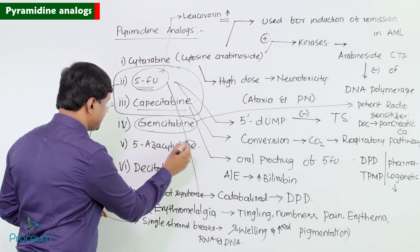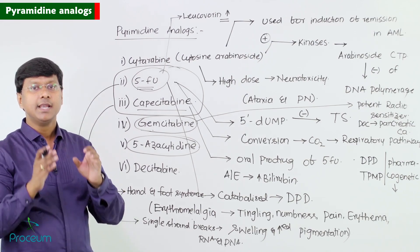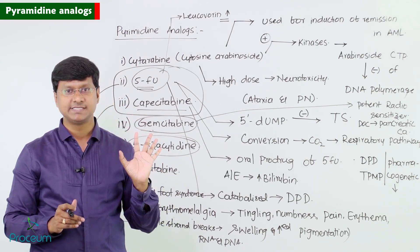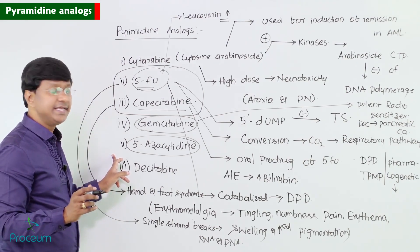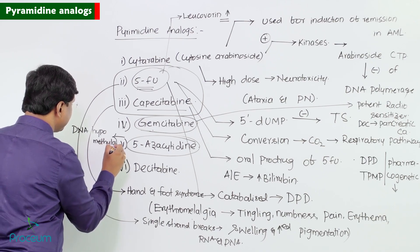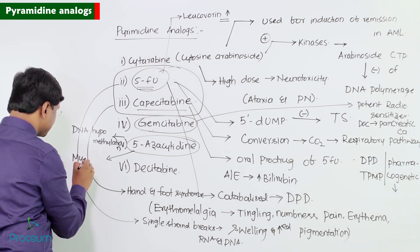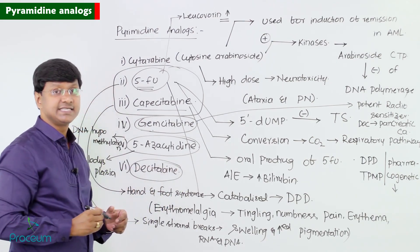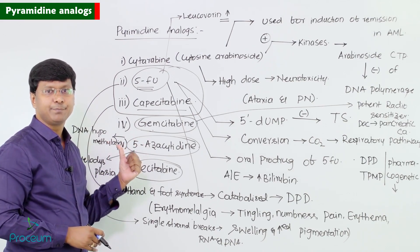5-azacitidine acts by DNA hypomethylation and is approved for the treatment of myelodysplasia. Decitabine is another drug acting by the same mechanism — DNA hypomethylation.